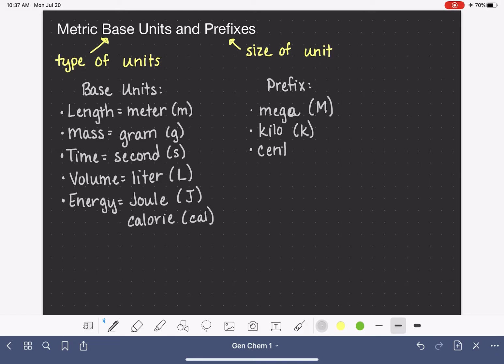Kilo, which is abbreviated with a lowercase k. Centi, which is abbreviated with a lowercase c. Milli, which is a lowercase m. Micro, which is a lowercase Greek mu, looks kind of like a u with a swirl in front of it. And then nano, which is abbreviated lowercase n.